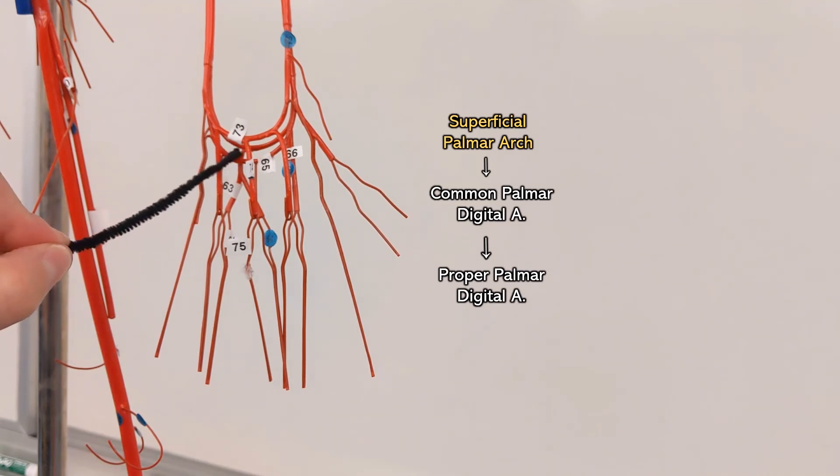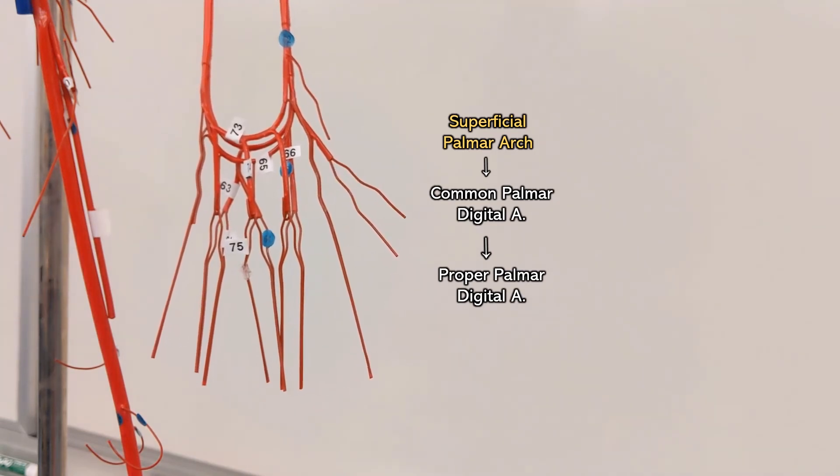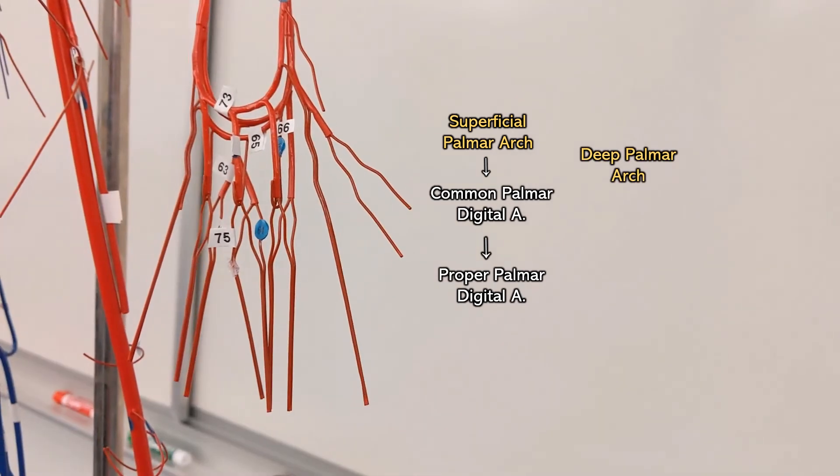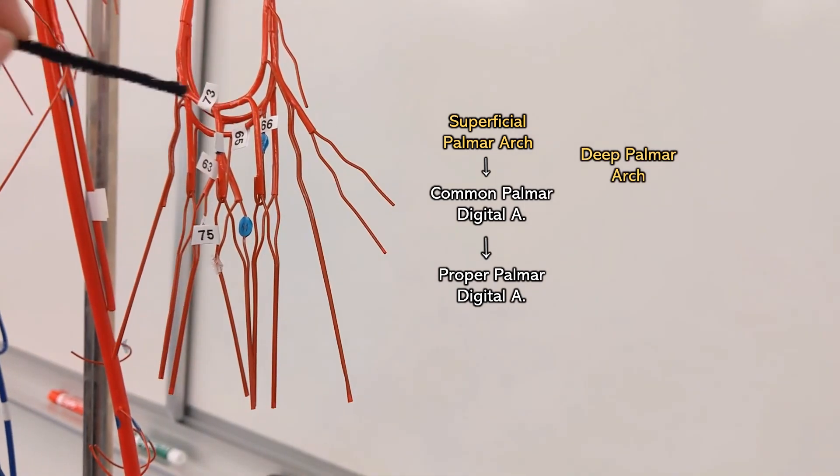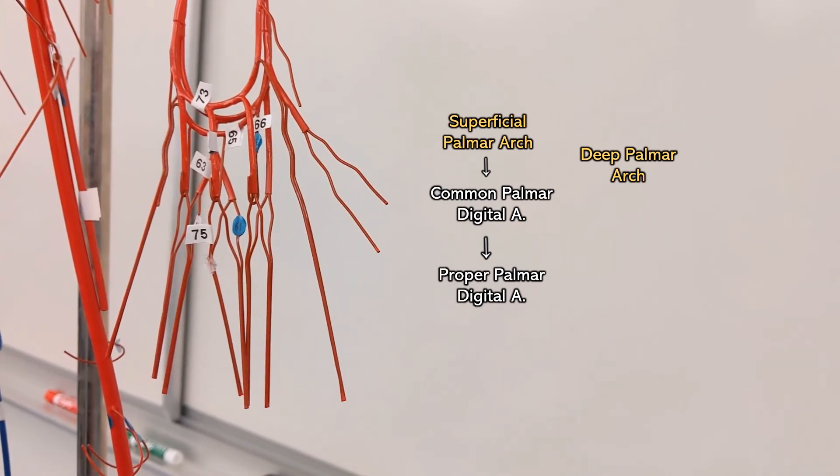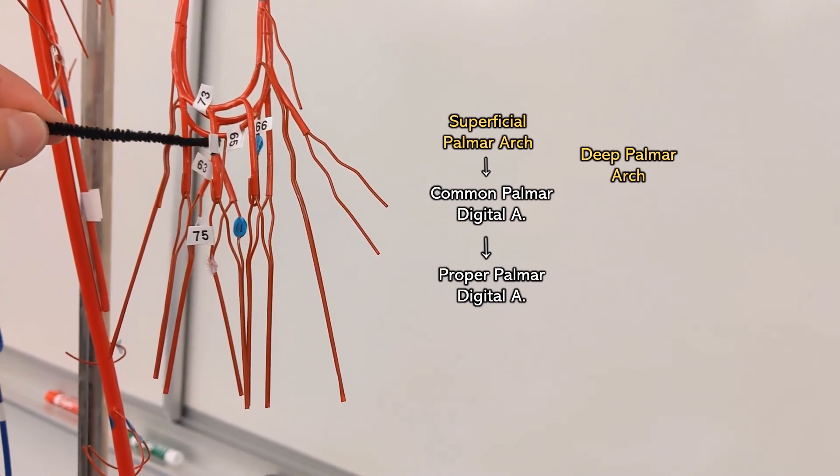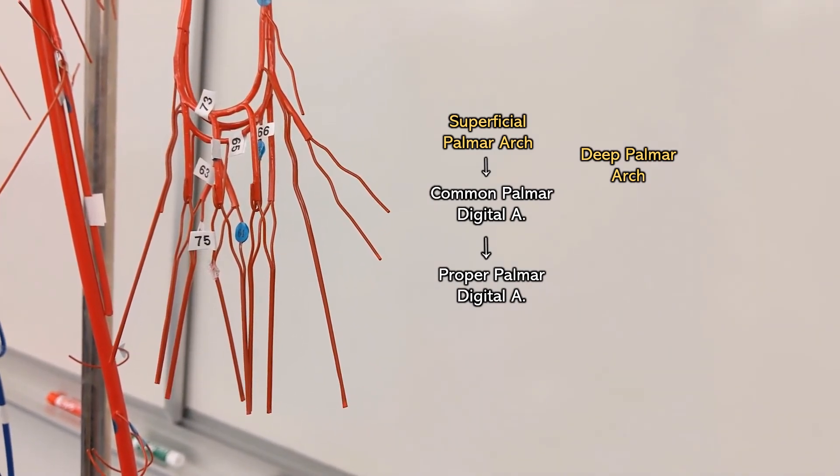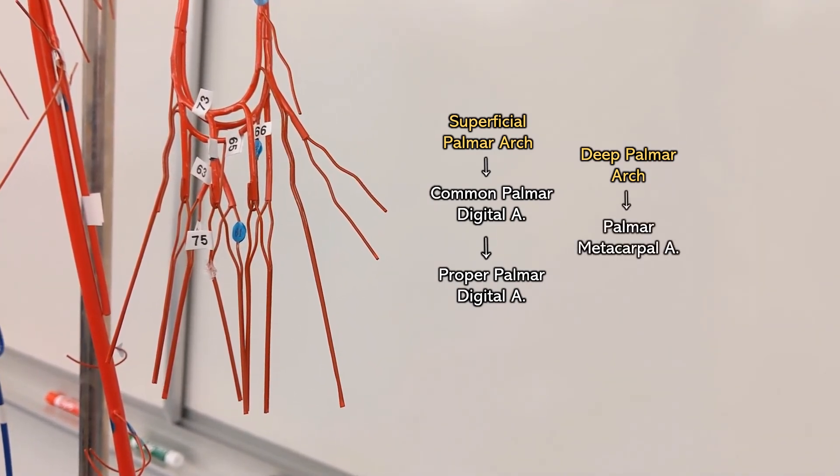The arch that has a 65 on it is the deep palmar arch. Coming off the deep palmar arch are the palmar metacarpal arteries.